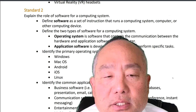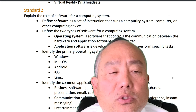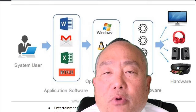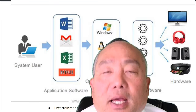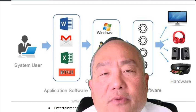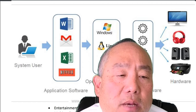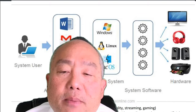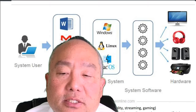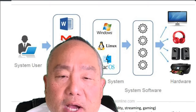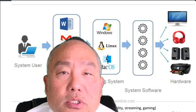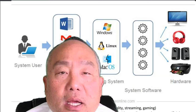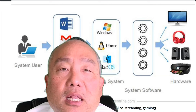Operating system is software that controls the communications between the hardware and application software of a computer. Application software is developed to help the user perform specific tasks. Identify the primary operating systems of a computing device: Windows, Mac OS, Android, iOS, Linux.